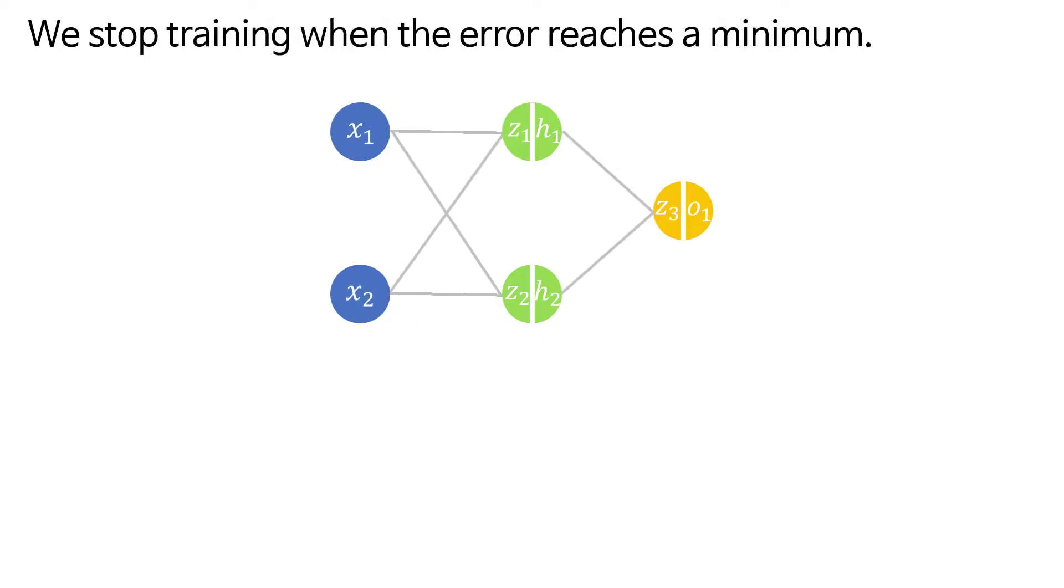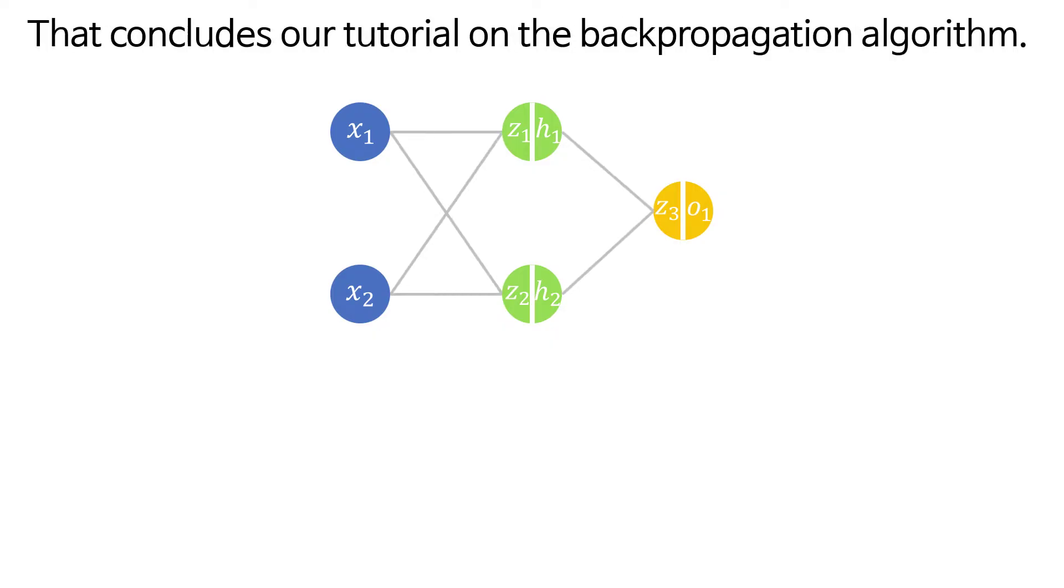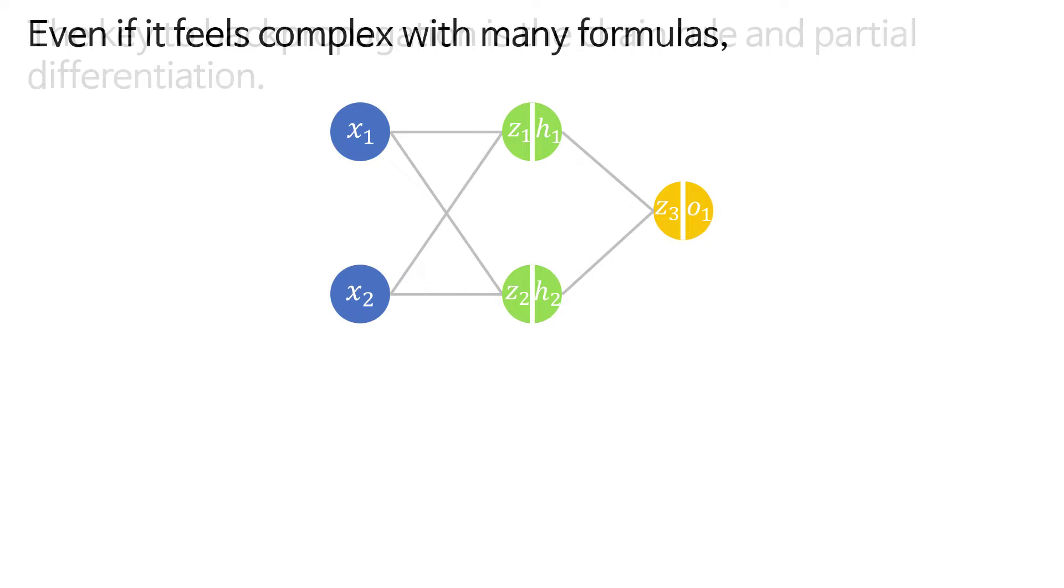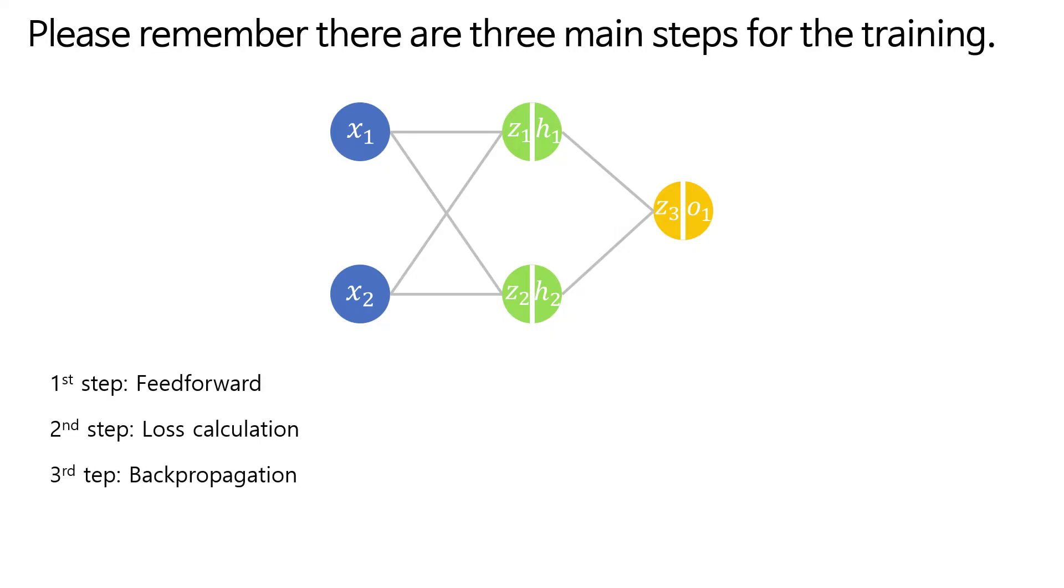That concludes our tutorial on the backpropagation algorithm. The key to backpropagation is the chain rule and partial differentiation. Even if it feels complex with many formulas, please remember there are three main steps for the training.